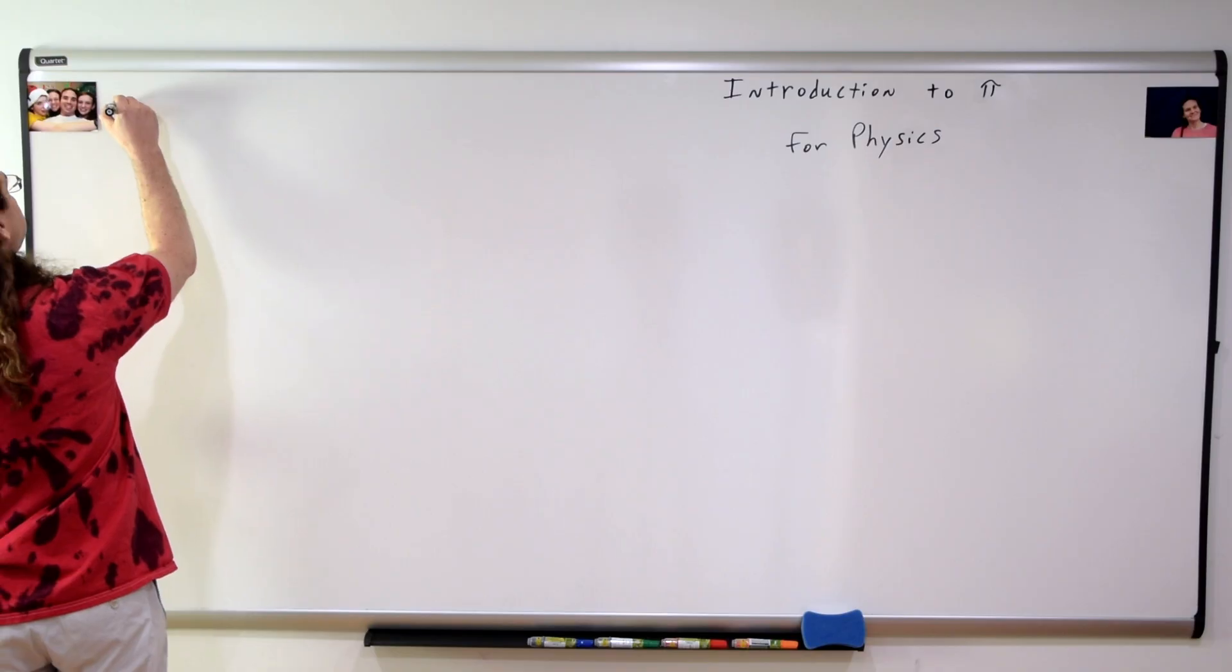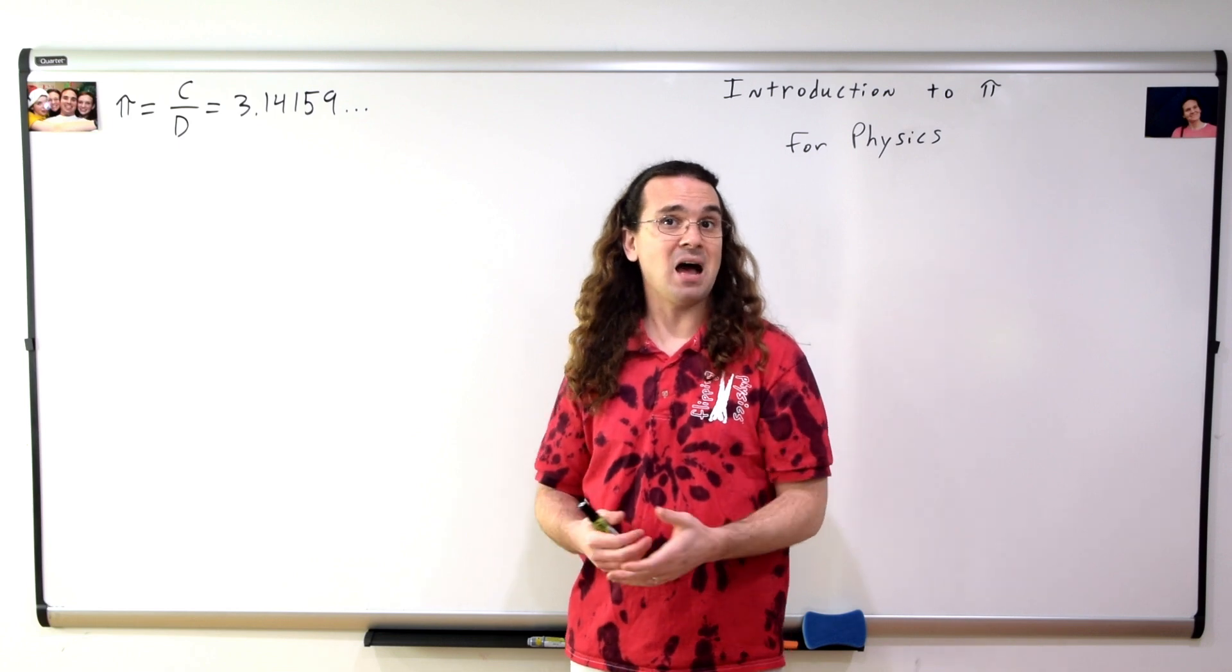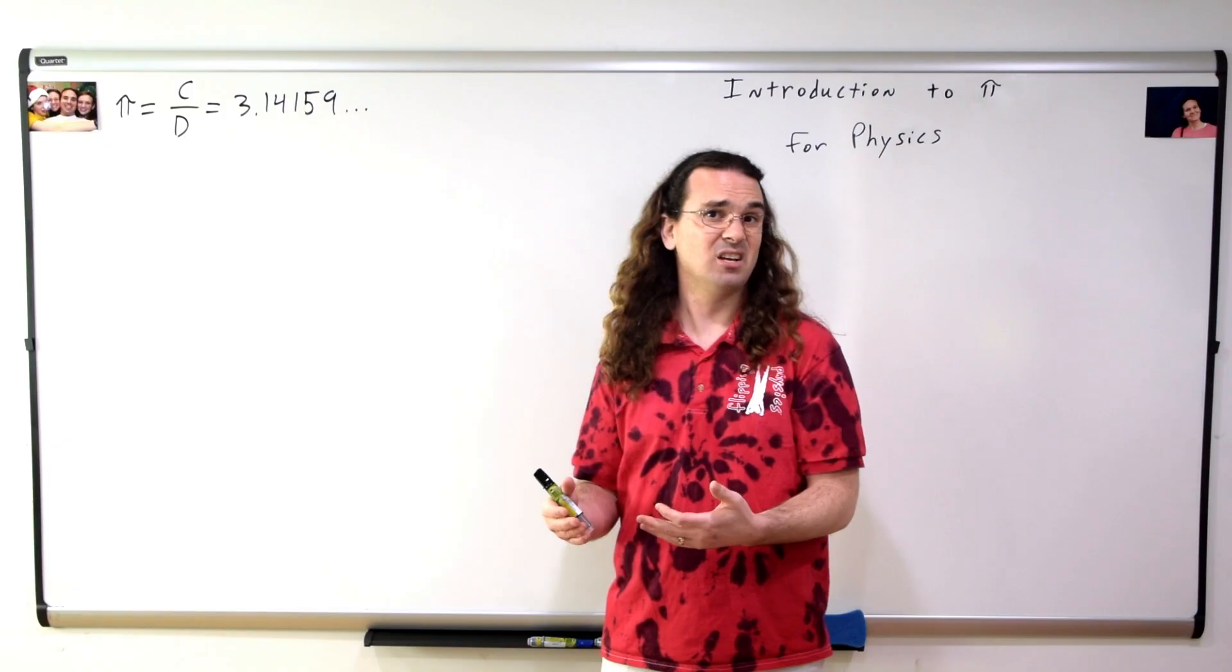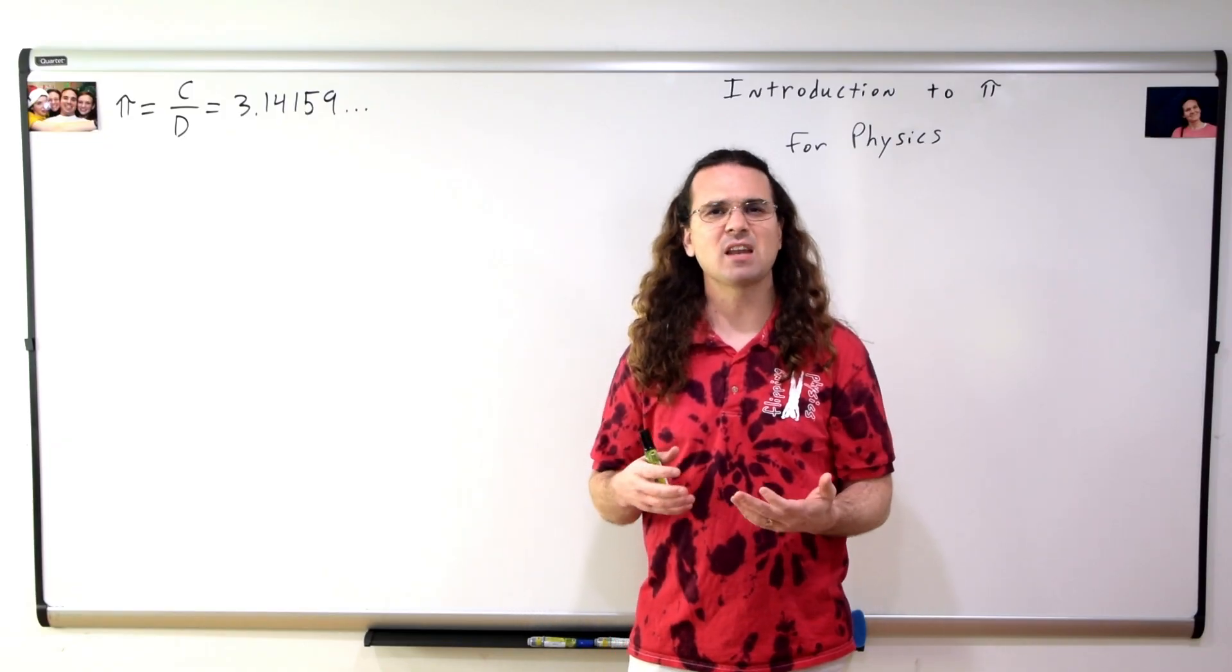Oh, pi is the ratio of a circle's circumference to its diameter. Yes, the number pi is the ratio of the circumference of a circle to the diameter of the circle, and it equals 3.14159, etc.